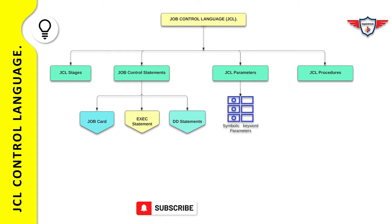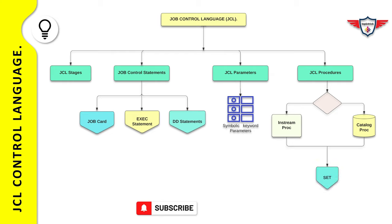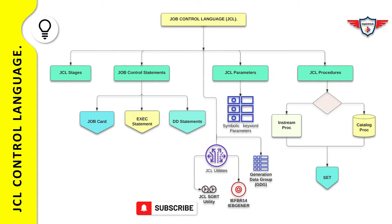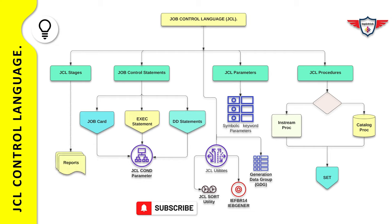After that, we will look at JCL procedure, focusing on in-stream procedure and catalog procedure, and how to override parameters using the set statement. In the later part of this JCL tutorial video, we will focus on JCL utilities such as JCL sort, IBGener, and IEFPR14. After that, we will focus on generation data group (GDGs) and why and where you use them. The last section is dedicated to JCL tips and tricks, covering how to process jobs conditionally using the JCL COND parameter or IF-THEN-ELSE statement, and the difference between JCL LIB, STEPLIB, and JCL order.